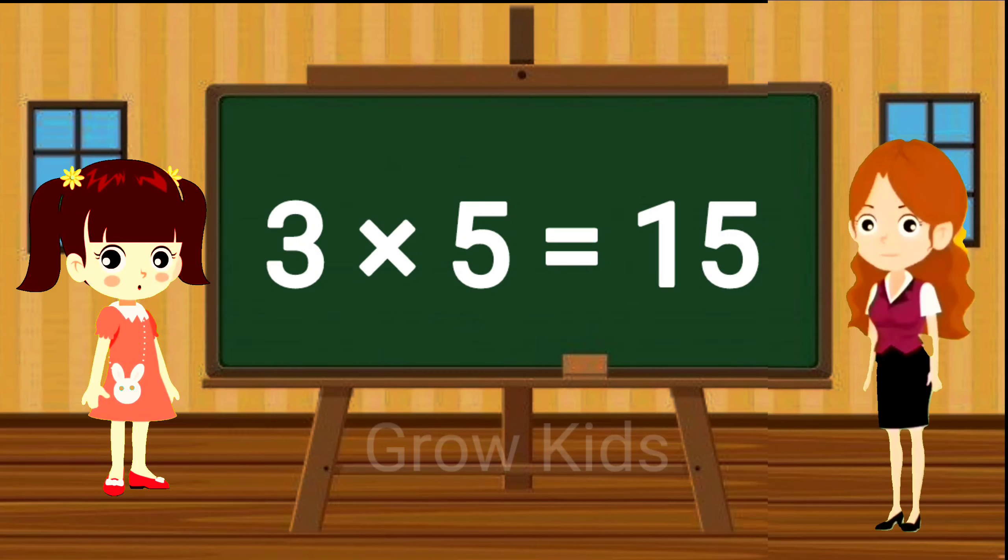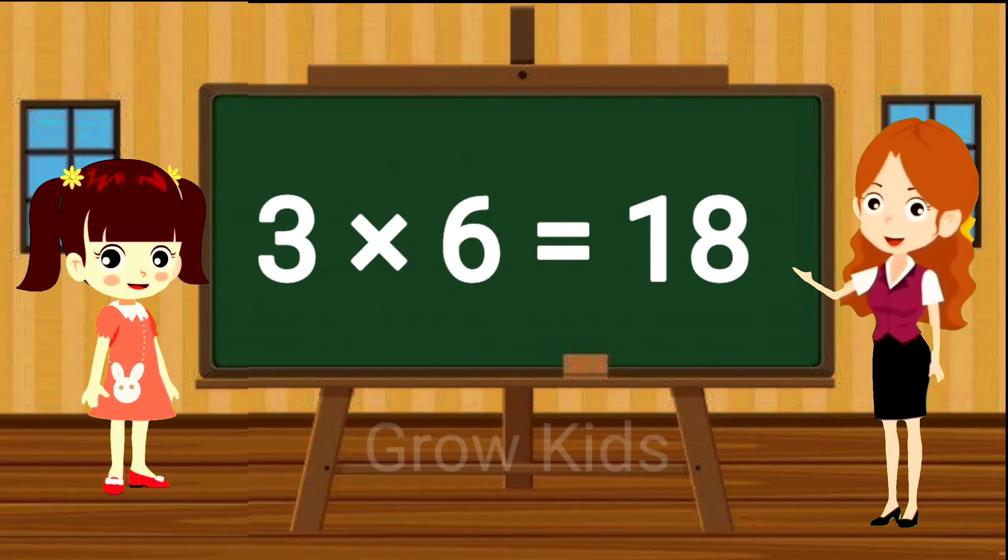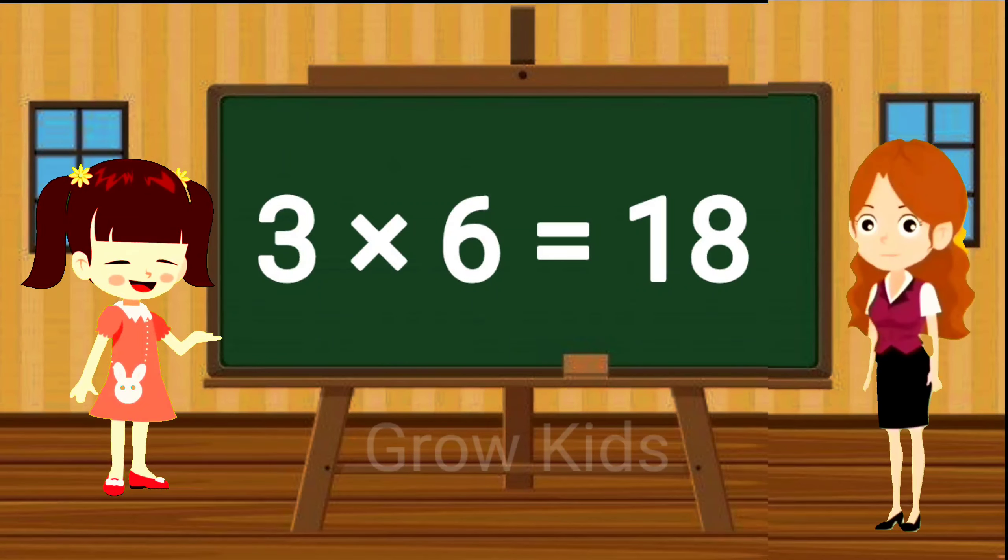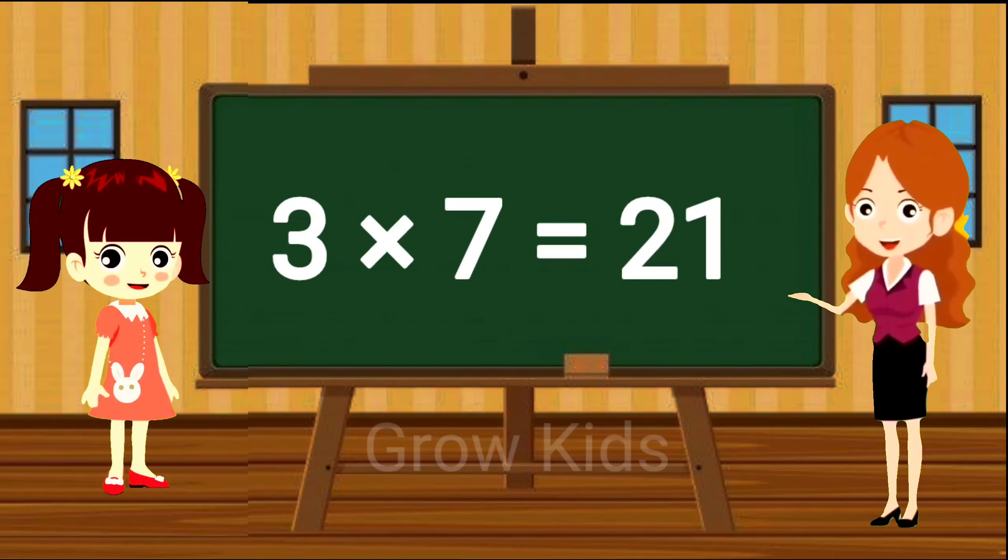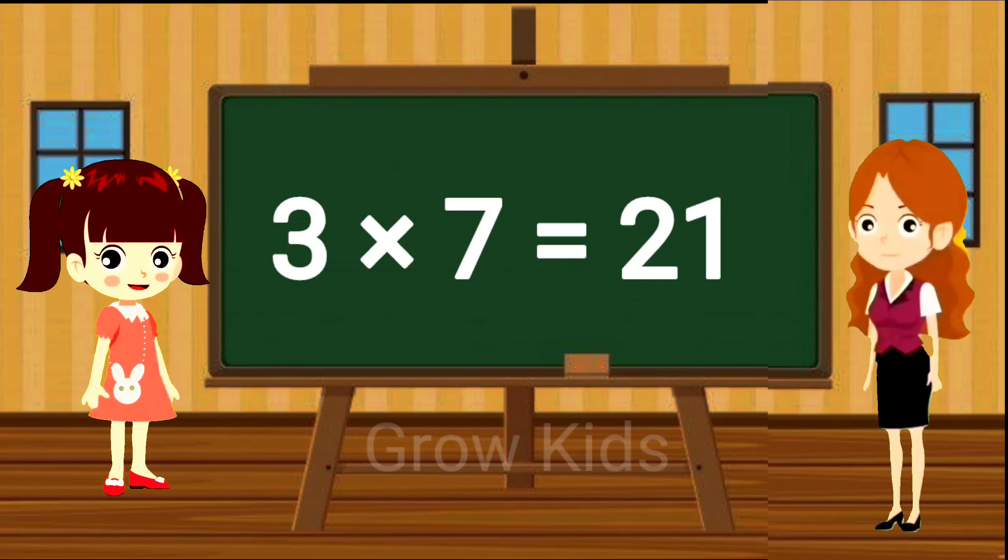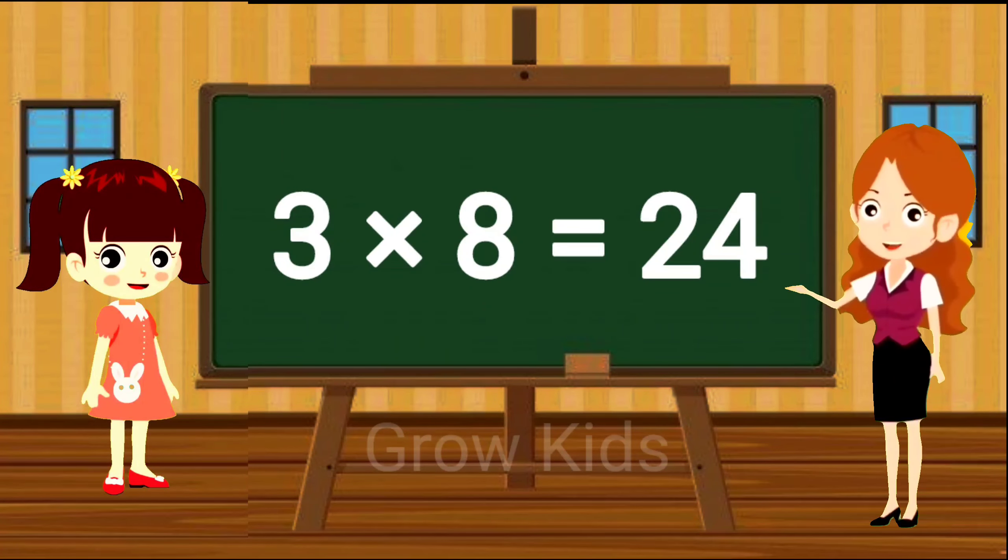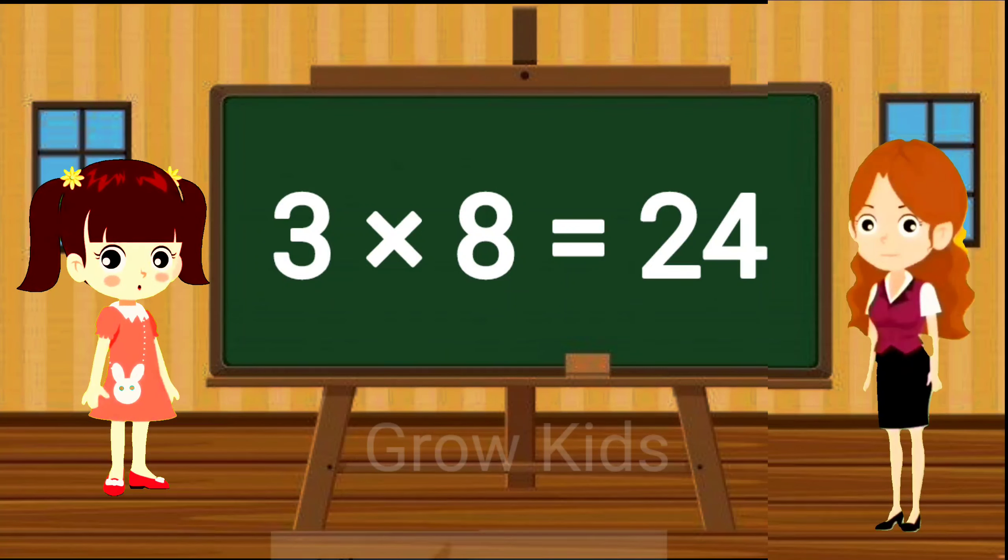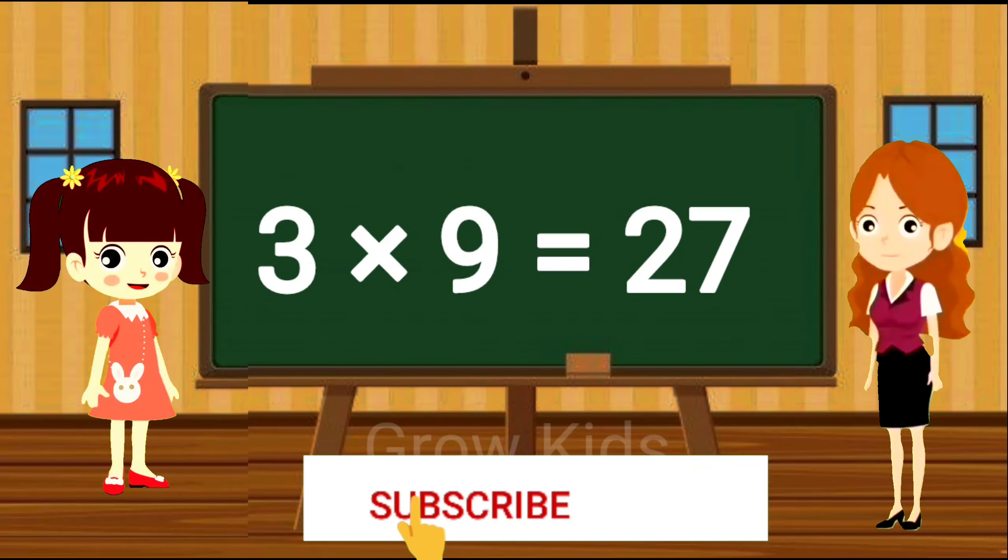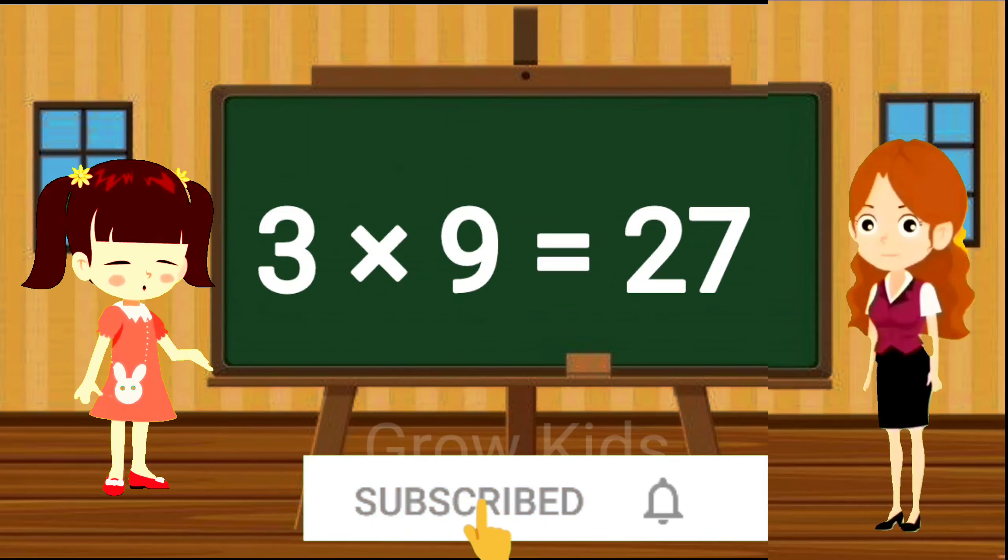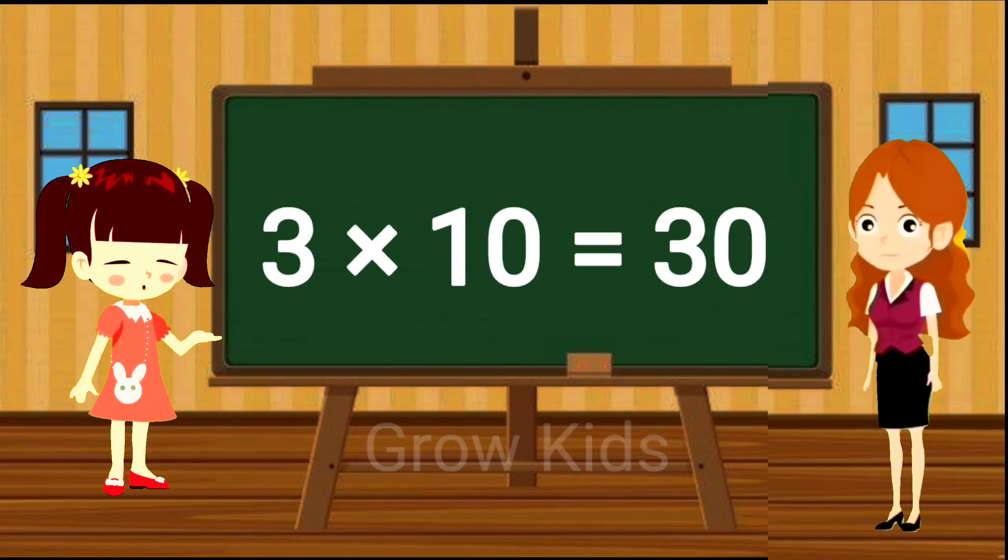3 5s are 15, 3 5s are 15. 3 6s are 18, 3 6s are 18. 3 7s are 21, 3 7s are 21. 3 8s are 24, 3 8s are 24. 3 9s are 27, 3 9s are 27. 3 10s are 30, 3 10s are 30.